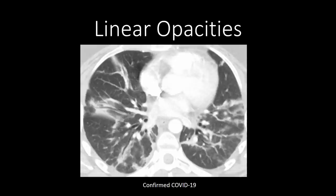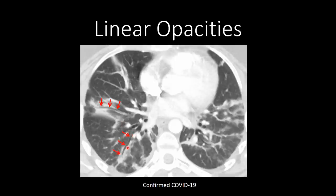This is a case of severe confirmed COVID-19 pneumonia showing a nice example of the linear opacities that are sometimes reported. This patient had ground glass predominant disease. In the right middle lobe you can start to see some linear opacities spread throughout the lung, associated with some ground glass opacity and some consolidation. We can also see bronchiolar dilation in the areas of abnormality.